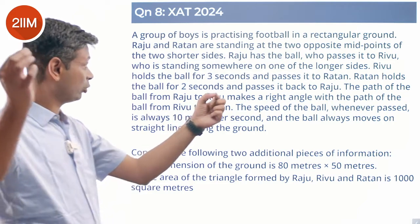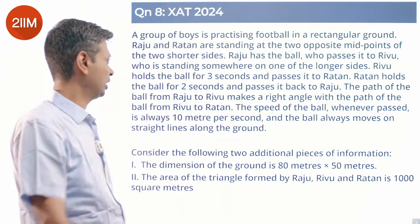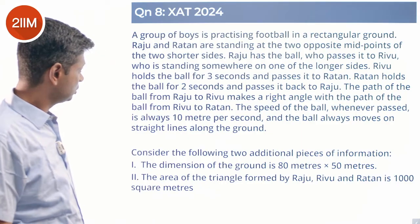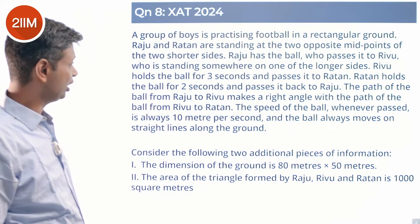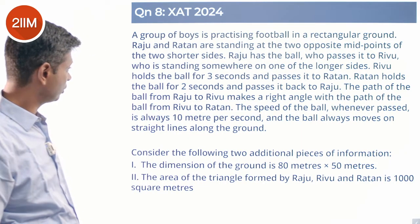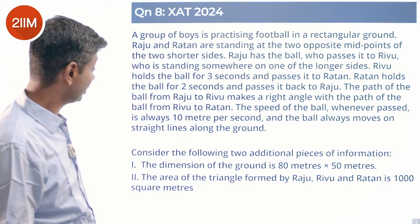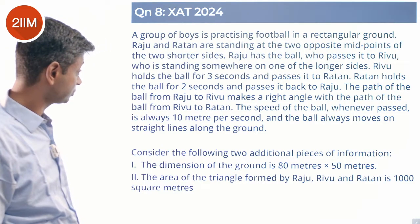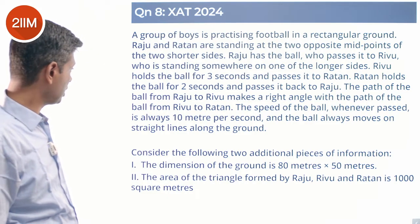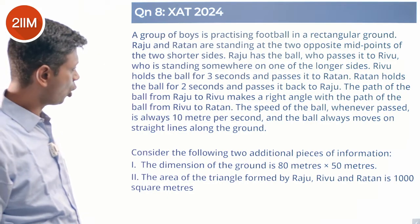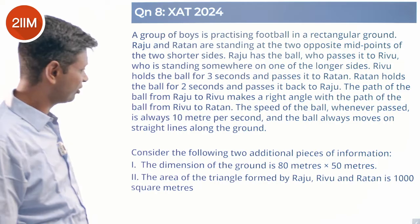Raju and Ratan are at the midpoints of the shorter sides, and Rivu is somewhere on the longer side. The path of the ball from Raju to Rivu makes a right triangle with the path from Rivu to Ratan. The speed of the ball whenever passed is always 10 meters per second, and the ball always moves in straight lines along the ground.